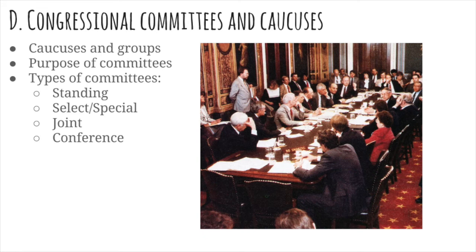The way Congress actually works and passes laws involves committees. Each chamber forms subcommittees and committees that deal with particular topics of legislation. These committees are the workhorses of the whole function of Congress, because it would be too difficult to get 100 or 435 people to sit around and actually debate. These committees are where bills get discussed, intensely amended, and where testimony is heard. There are four types of committees. Standing committees deal with continual topics of legislation, such as taxes or criminal justice — they're permanent and always around.